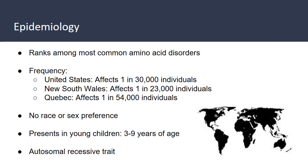Hartnup disease ranks among the most common amino acid disorders worldwide. In the United States it affects 1 in 30,000 individuals, similarly in New South Wales it affects 1 in 23,000, and in Quebec 1 in 54,000. There is no racial or sex preference. It typically presents in young children ranging from 3 to 9 years of age, and it is an autosomal recessive trait.